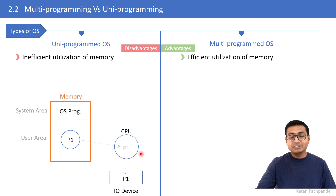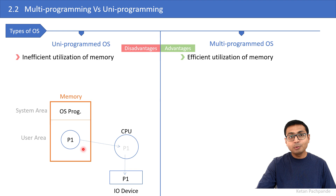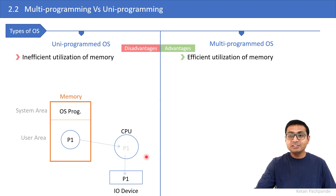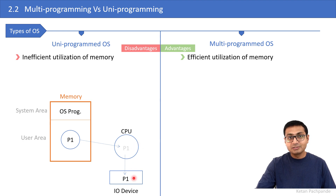While the process goes for IO, I cannot allocate the CPU to another process. Why? Because in uniprogramming, P2 and P3 cannot be loaded in memory — they are still on the secondary disk. And as we learned in the previous session, a program must first be loaded in memory before execution. So either I can use the CPU or the IO device, but both cannot be used simultaneously.